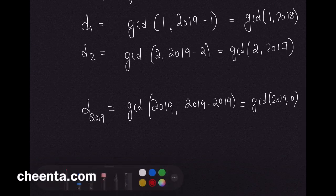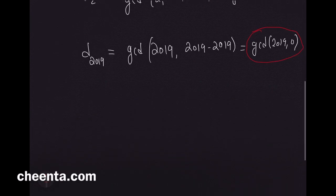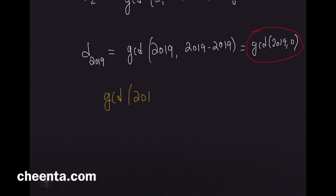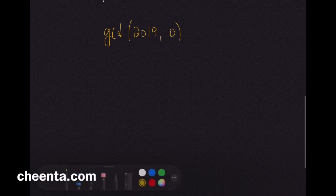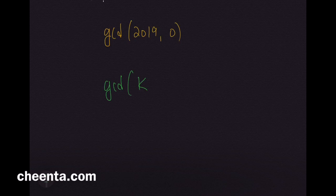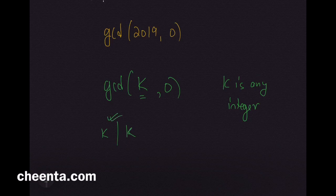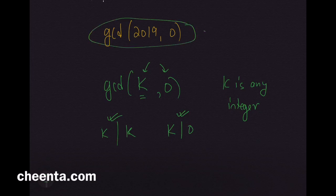What is the GCD of 2019 and 0? In fact, what is the GCD of any number k and 0? Well, it's k — because k divides k, and k divides 0 since any number divides 0. So k is the largest number that divides both k and 0. Therefore GCD(2019, 0) is just 2019.